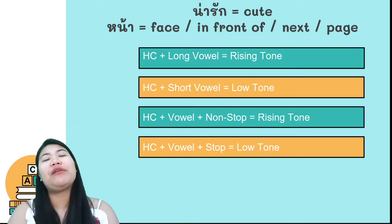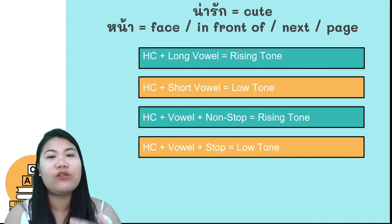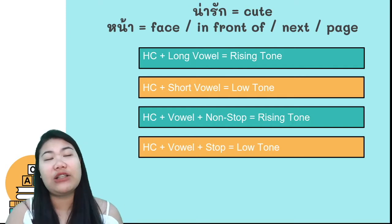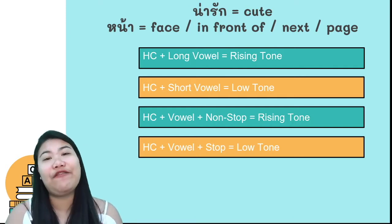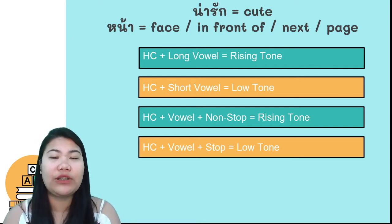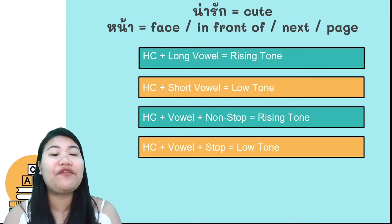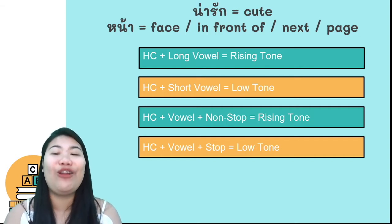You can remember: long vowel, long mixed vowel, special vowel, and non-stop final consonant — it's a live syllable, so make it rising tone. If short vowel or stop final consonant, it's a dead syllable, so make it low tone.